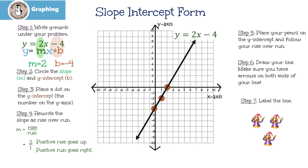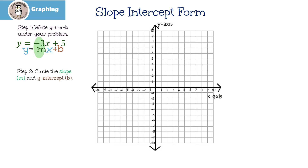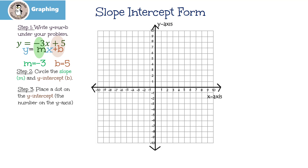Let's try another one. The first thing that I always like to do is write y equals mx plus b right underneath my equation. In step 2, all we have to do is circle our m, which is negative 3, and circle our b, which is 5. That means the slope is negative 3, and the y-intercept is 5. Step 3, we're going to place a dot on the y-intercept — the y-intercept is on the y-axis, so it goes right here.